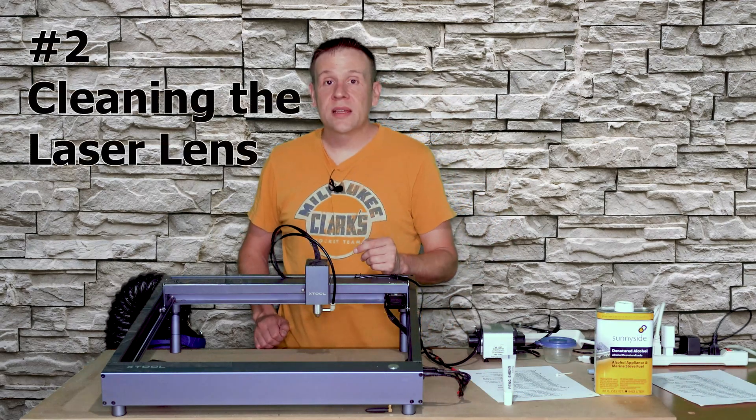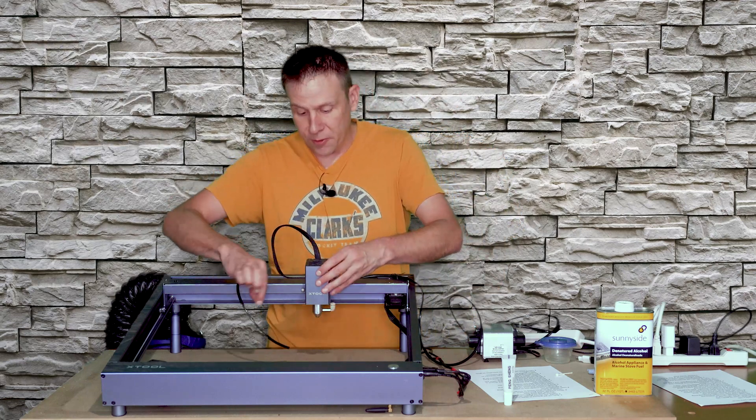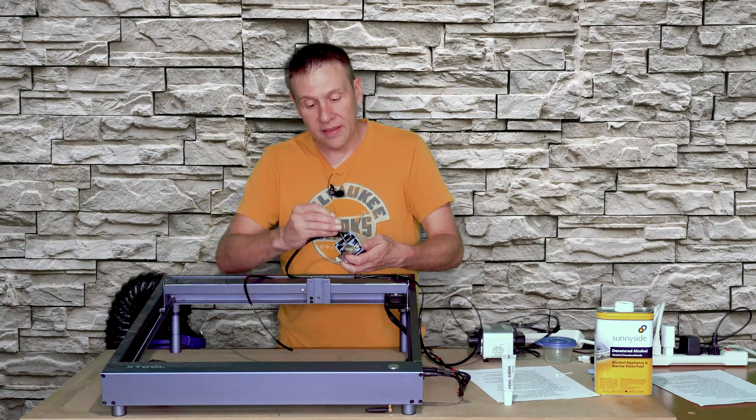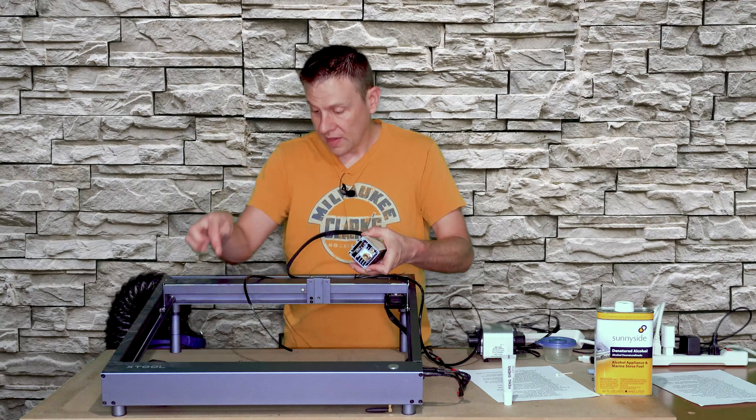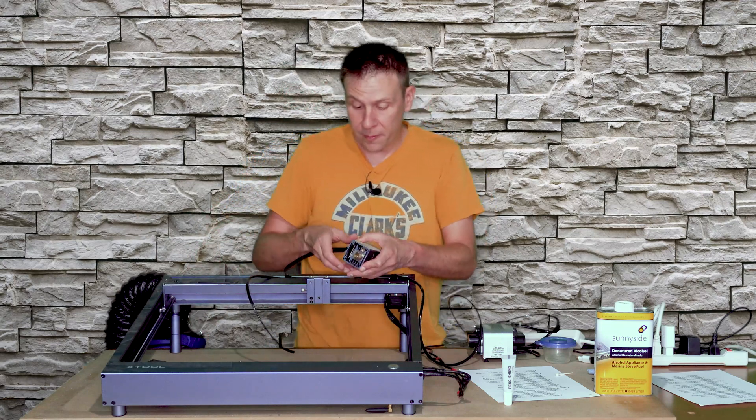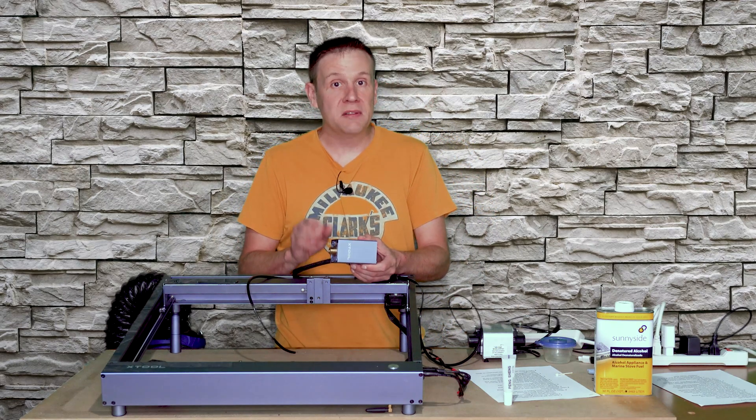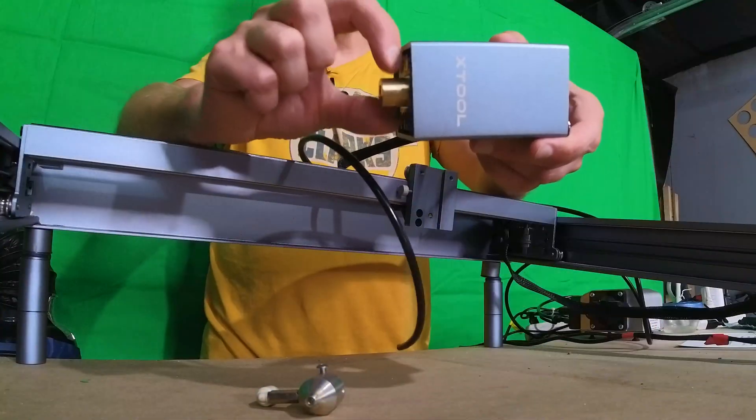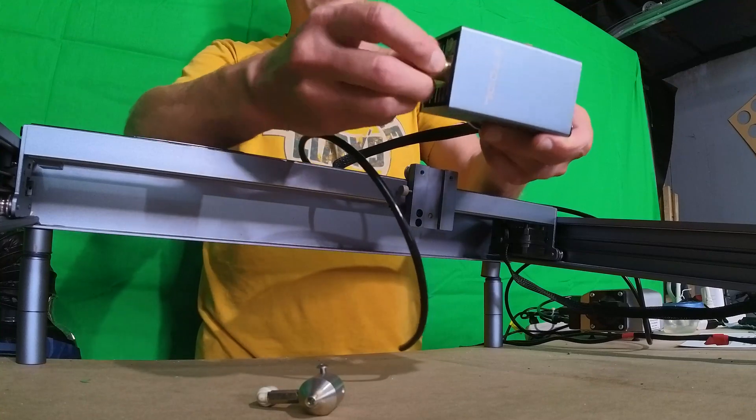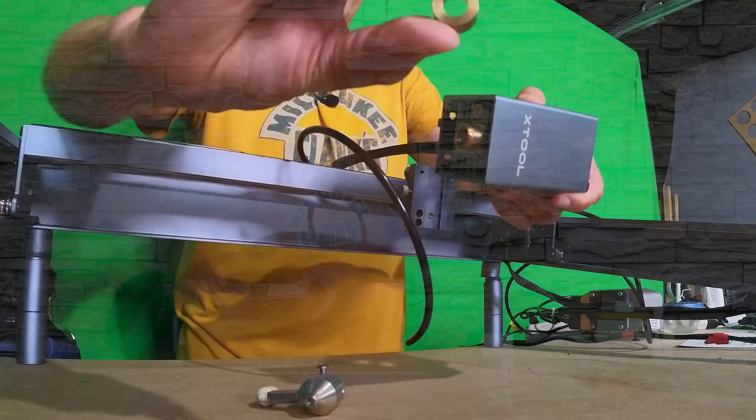Number two on our list is cleaning the lenses on our laser. I'll start out by removing any accessories so that I can remove the laser module from the gantry. Here's that air assist nozzle. And this is definitely a step that you want to do with machine power off. I have the latest generation of the 10 watt laser non pro edition. So this diameter is a little bit larger, and it sticks out a little bit further.